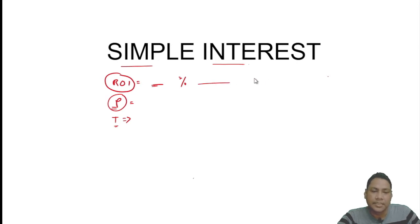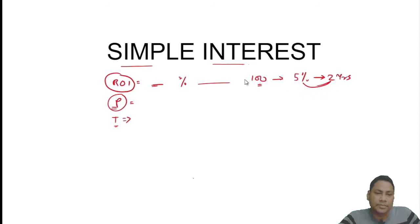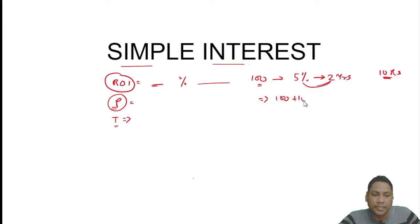For example, if anyone has given or taken 100 rupees at a rate of interest of 5 percent for two years, the interest becomes 5 into 2, that is 10 percent. Ten percent on 100 rupees means 10 rupees. After all, we have to pay the lender the amount, which is 100 plus 10, that is 110 rupees. This total is called the amount.